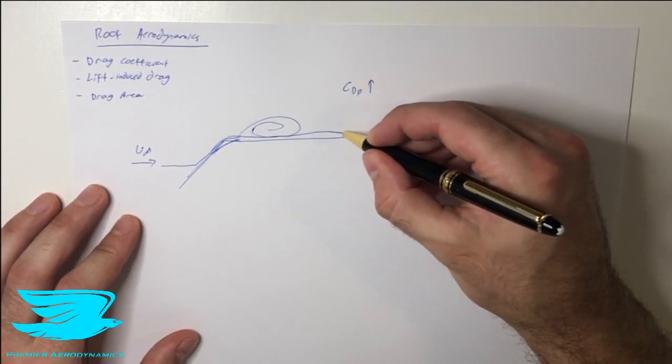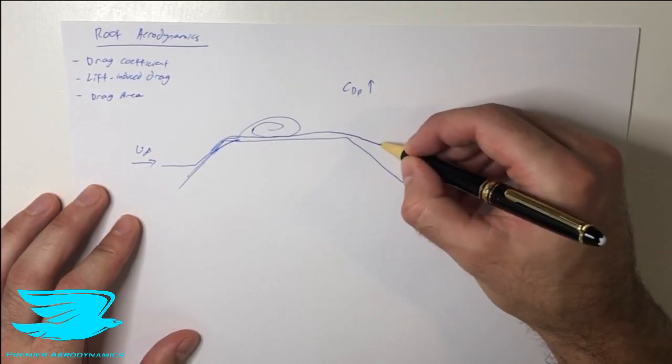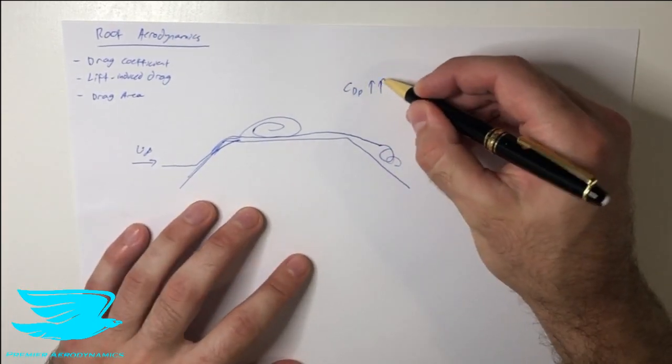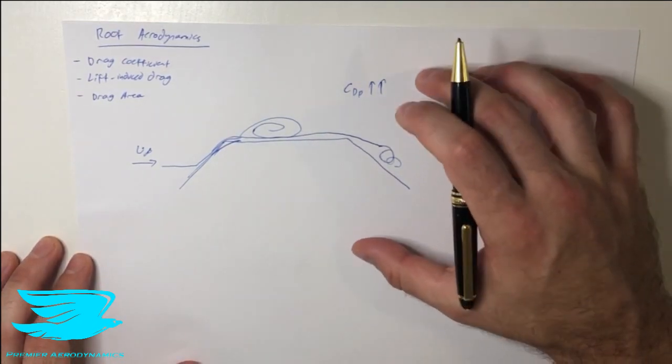So let's say the flow comes along here, and then it separates over this edge here, because it's too sharp. And then we'll get quite a big wake here as well. What this does is it also increases the pressure drag as well. So, both of these are a problem.